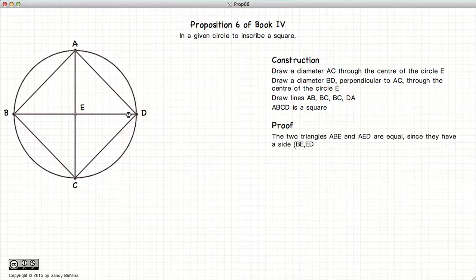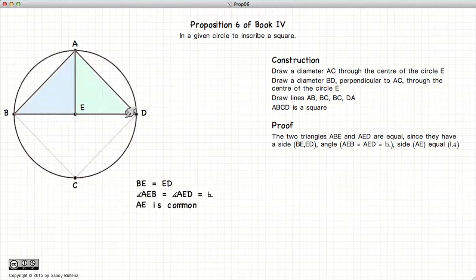So how do we prove it? Well, let's look at the two triangles, ABE and AED. They have a common side AE. They have an equal angle, because it's a right angle here at the point E. And BE is equal to ED, because they're both radii of the same circle.